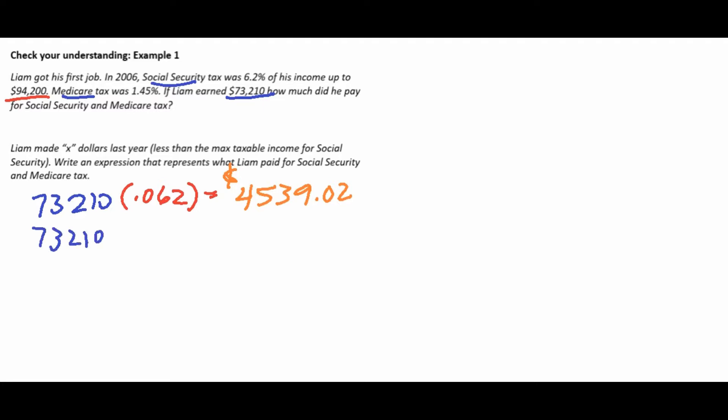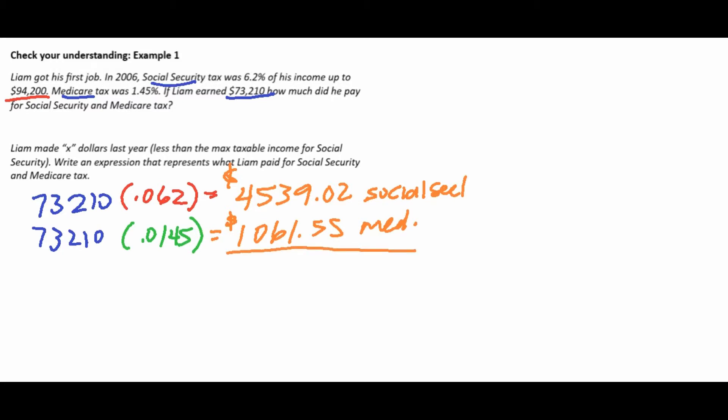For Medicare, we take the same $73,210 and multiply by 0.0145, which gives $1,061.55. Adding the two together: $4,539.02 + $1,061.55 = $5,600.57. So Liam pays a total of $5,600.57 in Social Security and Medicare tax combined.